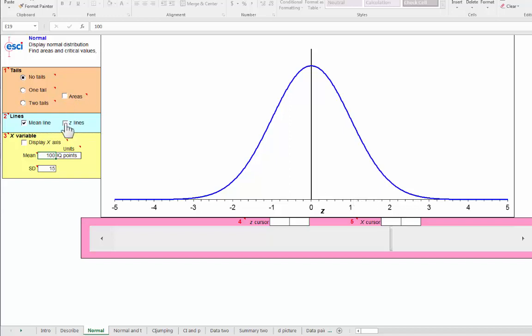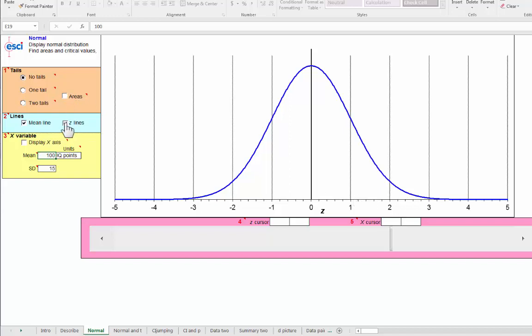I can turn on the Z lines like this. Then our rules of thumb say that the area under the curve between 0 and 1 is approximately one third of the total. Another third here. And another rule of thumb is that between Z minus 2 and 2 is about 95% of the total area, so about 2.5% beyond 2 and another 2.5% beyond minus 2.